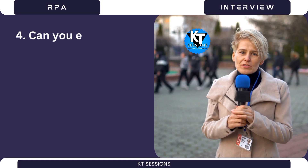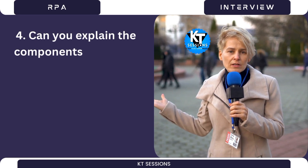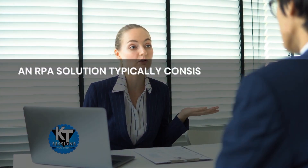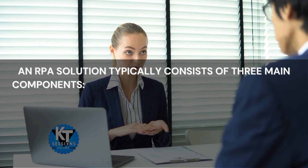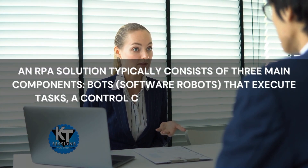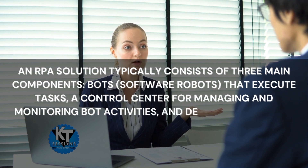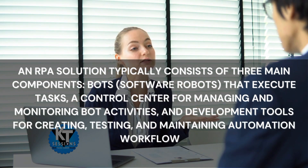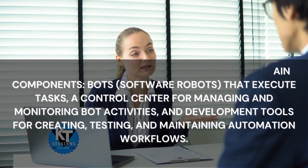Question 4: Can you explain the components of an RPA solution? An RPA solution typically consists of three main components: bots (software robots) that execute tasks, a control center for managing and monitoring bot activities, and development tools for creating, testing, and maintaining automation workflows.